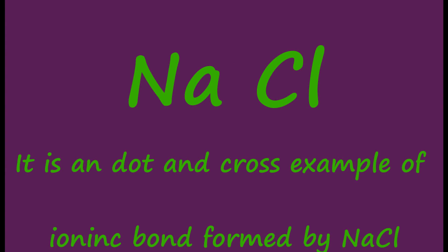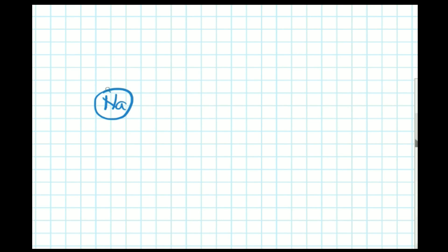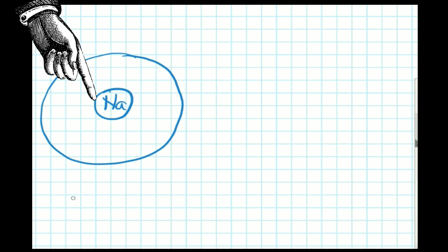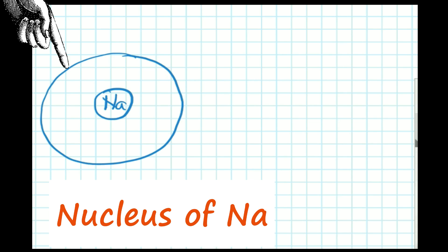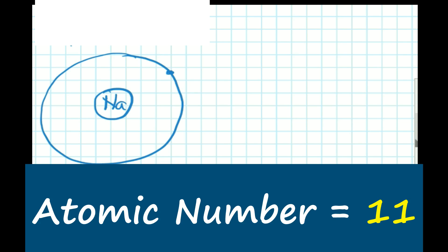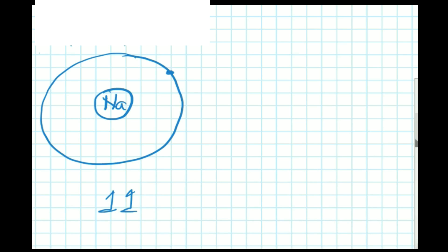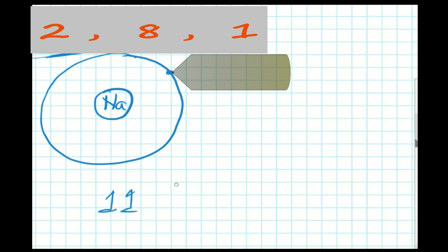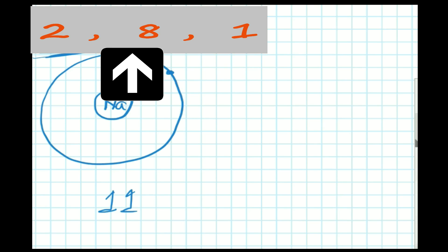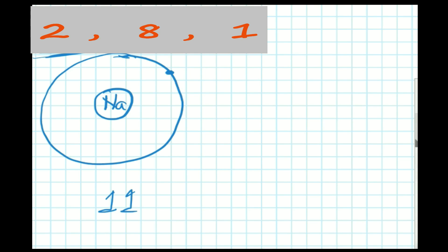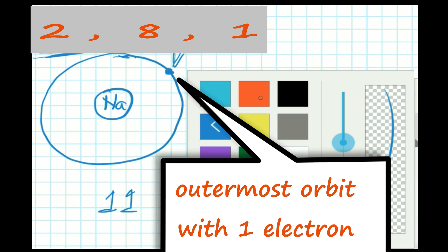I will show the dot and cross structure by taking sodium chloride as an example. To show the dot and cross notation, we have to know the atomic structure of sodium and chlorine. The atomic number of sodium is 11, so in the outermost orbit there will be one electron — the electron distribution is 2, 8, 1 across the first, second, and outermost orbit.